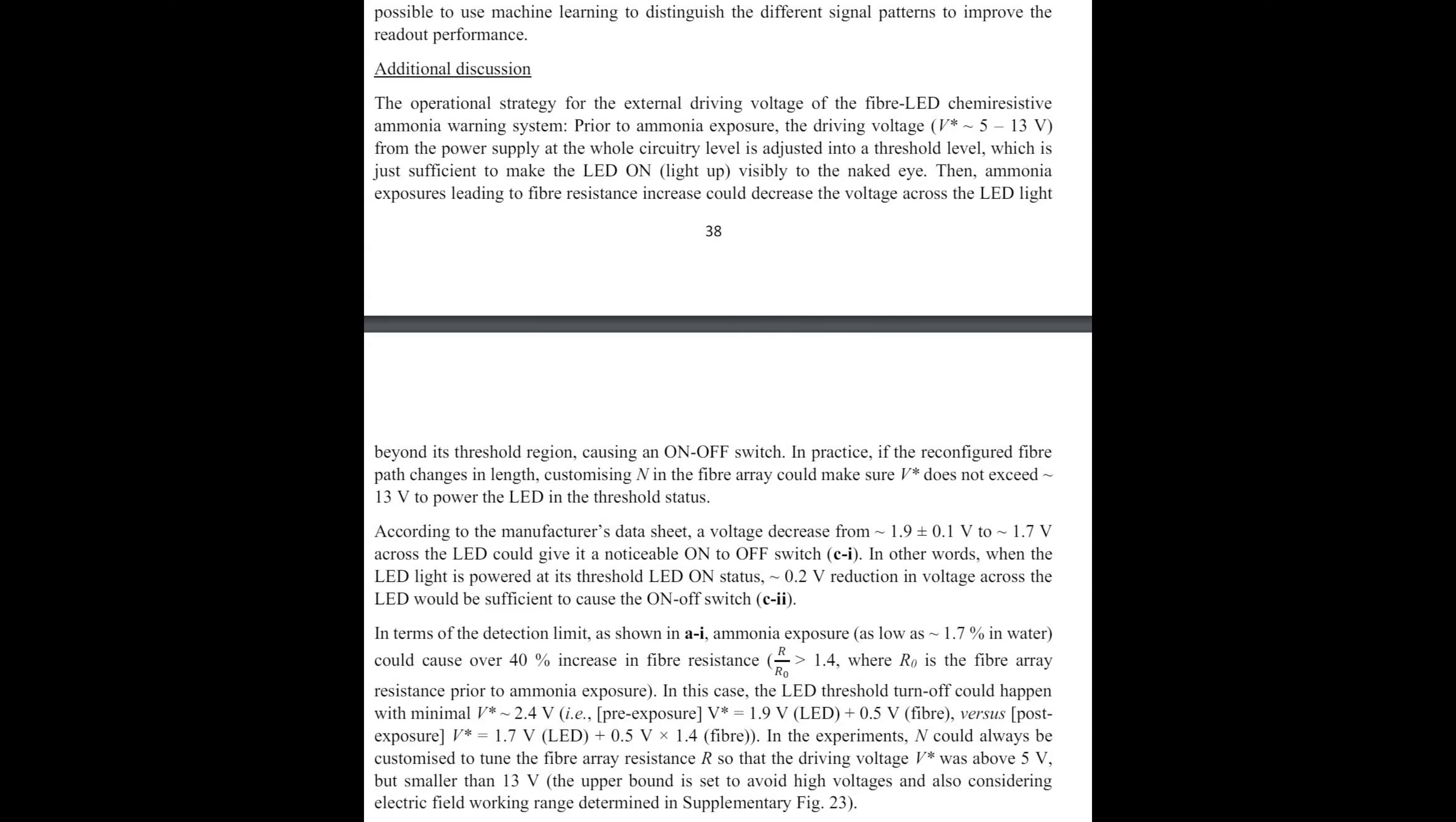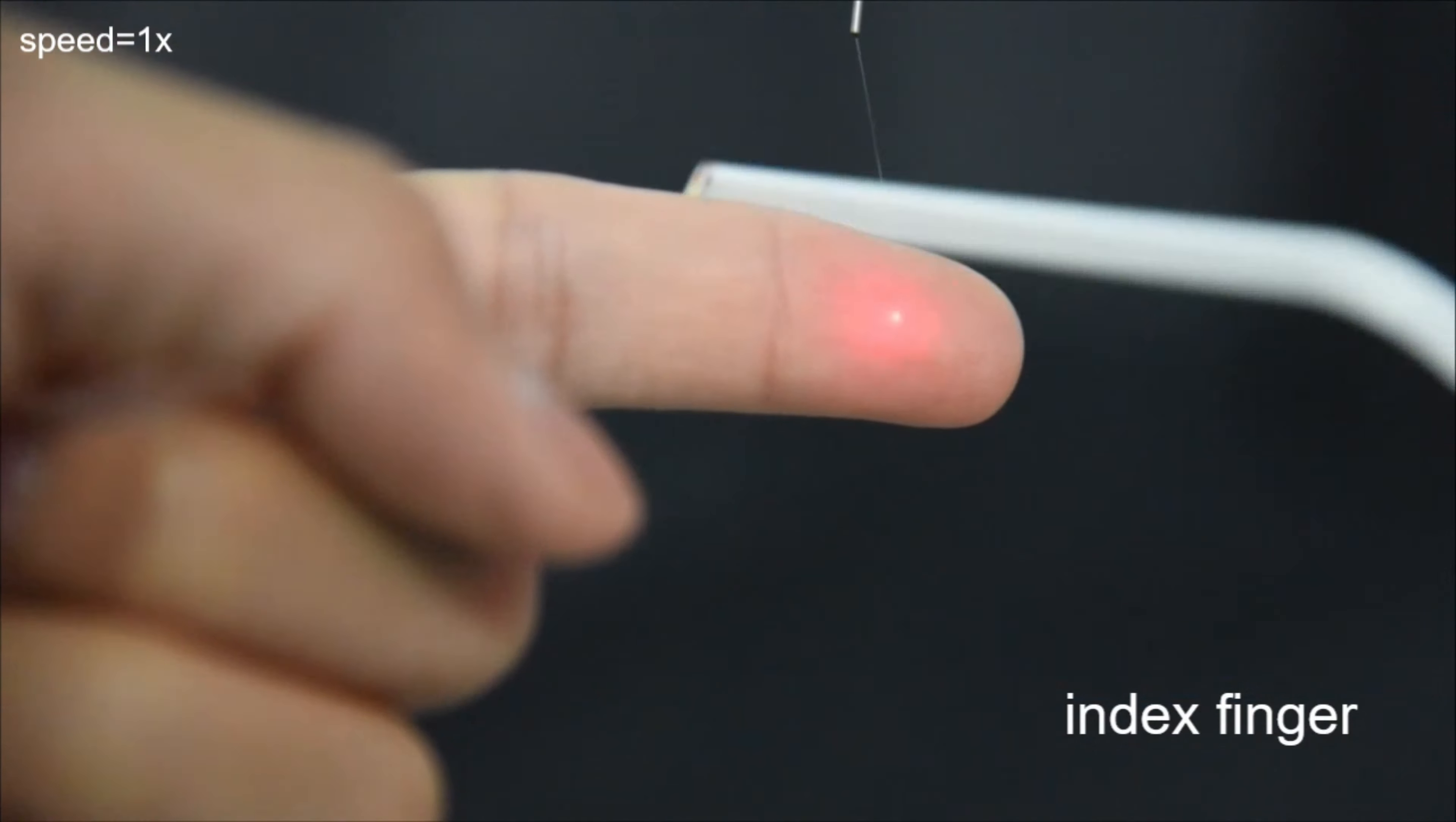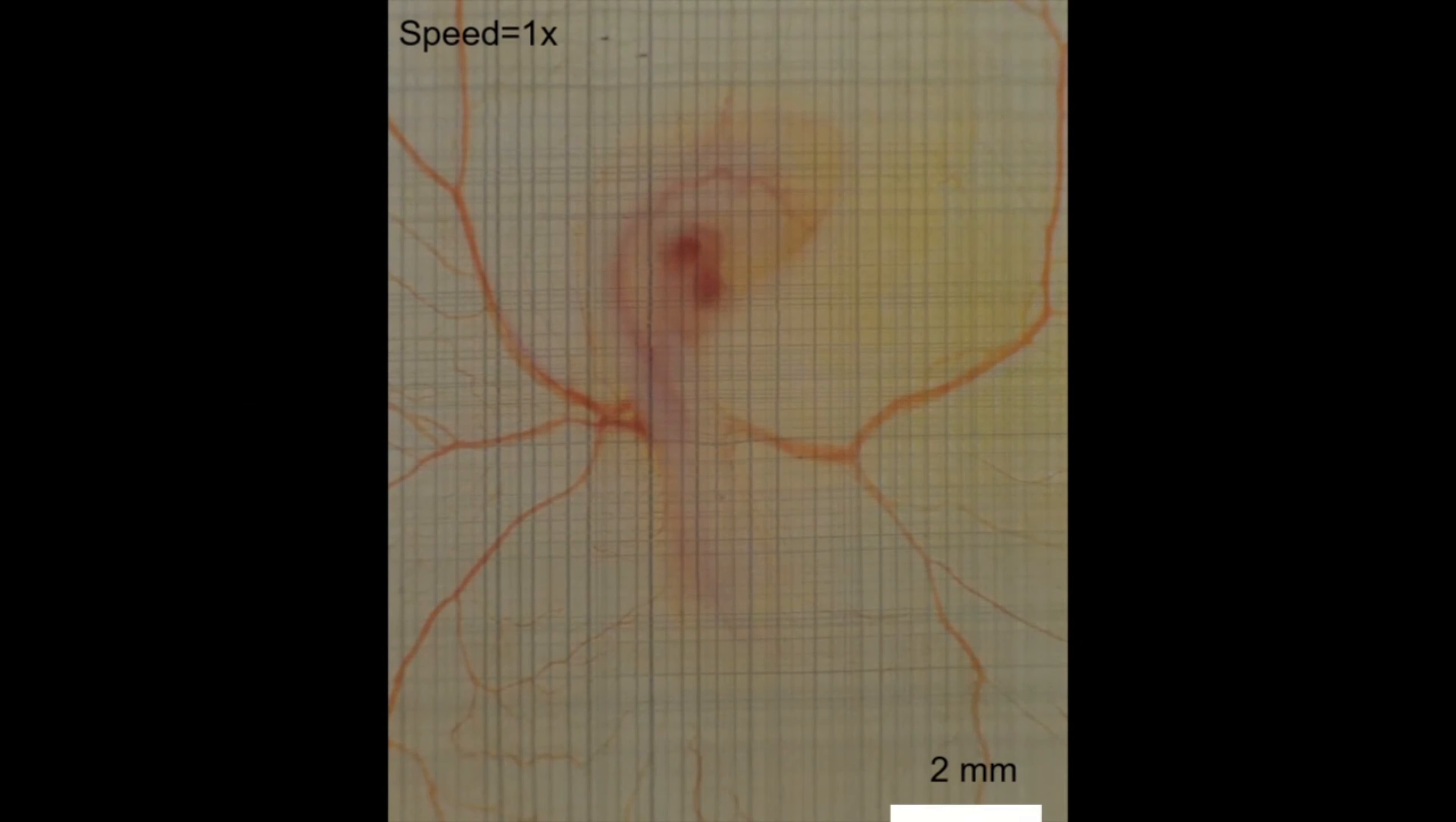The crucial aspect in accurately perceiving any biological surface, such as skin or a leaf, lies in the interface connecting the device and the surface, explained Professor Yan Yan Sherry Huang, who spearheaded the study at Cambridge's Department of Engineering. Furthermore, our aim is to develop bioelectronics that are entirely undetectable to the user, ensuring they do not disrupt the user's interaction with the environment. Additionally, we strive for sustainability and minimal waste in these bio electronic devices.